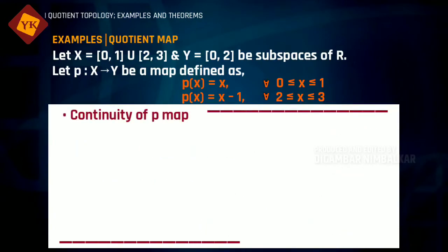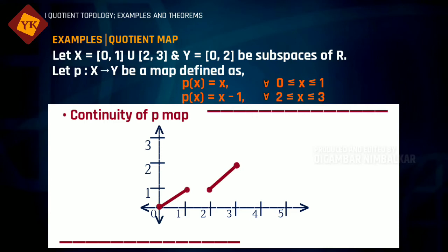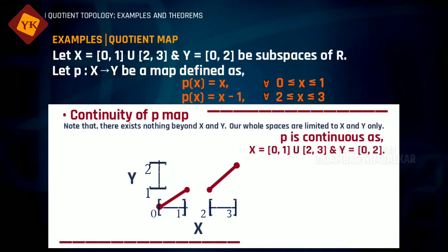Further, we see that the map p is continuous. If we draw the graph of this function p from X to Y, then we see that the function is discontinuous, but this function is not. This graph is the graph in R², but we are not concerned with R². So if we remove all the other parts except topological spaces X and Y, then we can easily see that the graph is continuous.